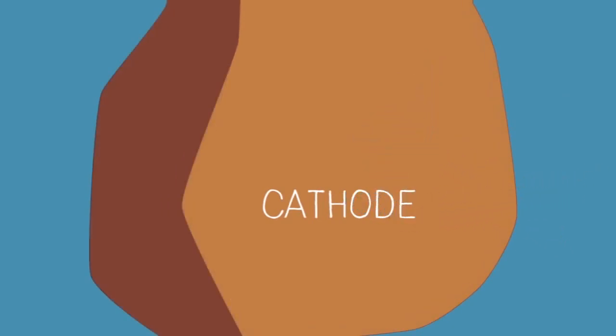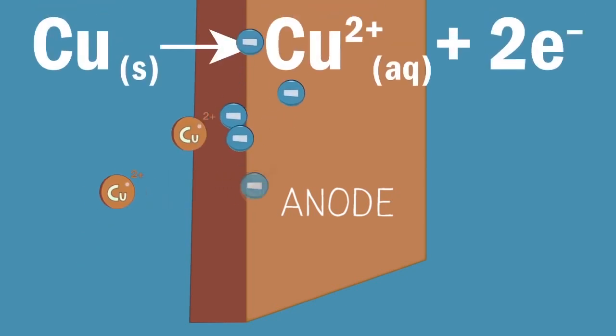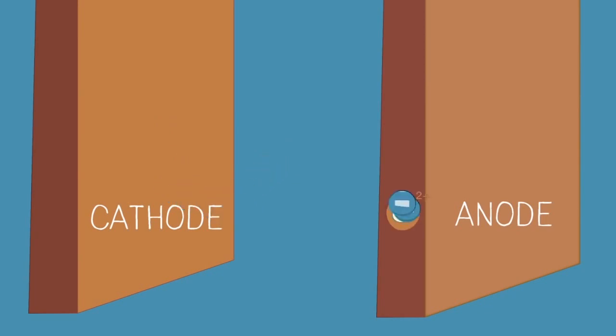At the anode, copper metal goes into solution as copper 2+ ions as shown by the equation. When a copper ion is deposited at the cathode, another copper ion goes into solution at the anode. The concentration of the solution effectively stays the same.